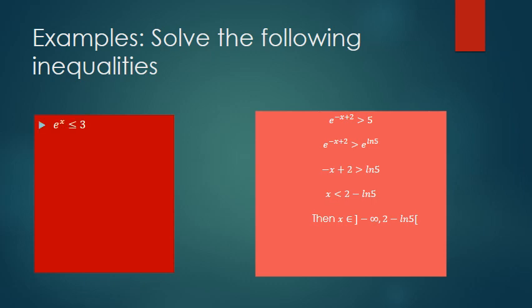Example: e^x ≤ 3. Instead of 3 we put e^(ln 3), so x ≤ ln 3. The solution is from minus infinity to ln 3.